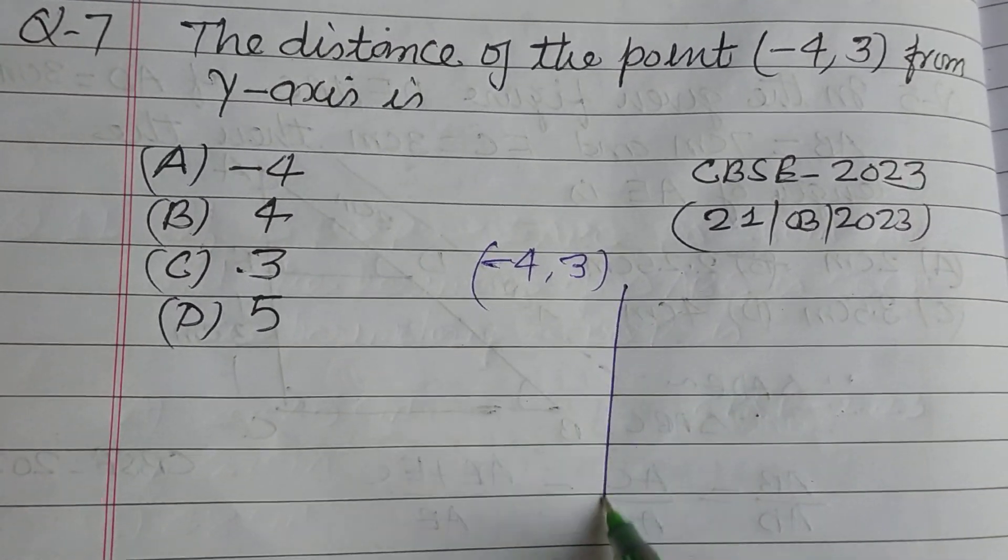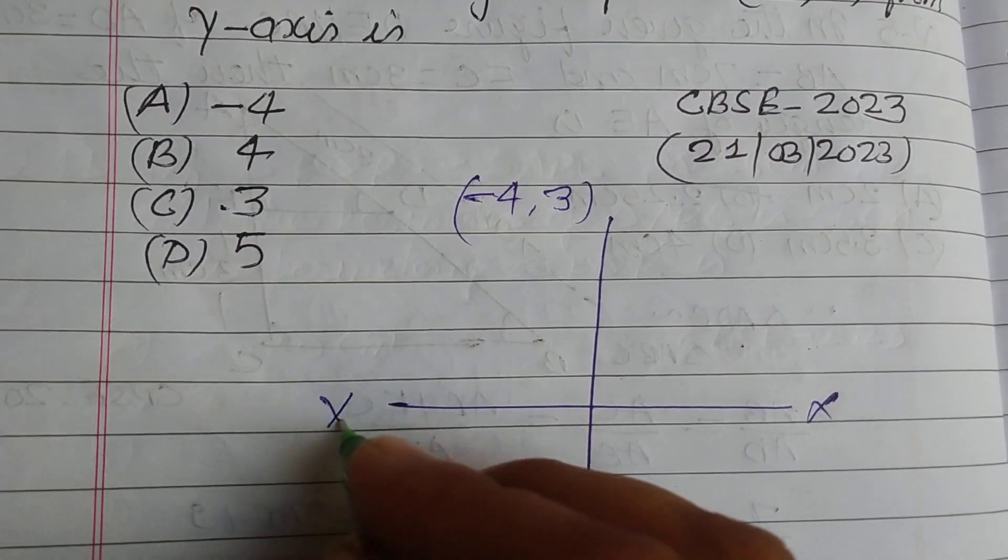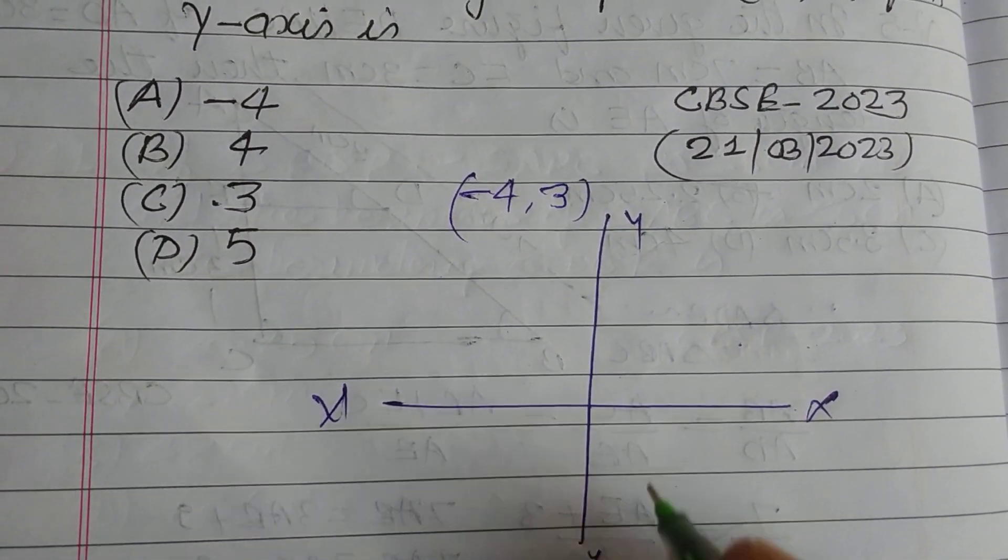This is x, x-dash, and y, y-dash. And this is the origin point, which is (0, 0).